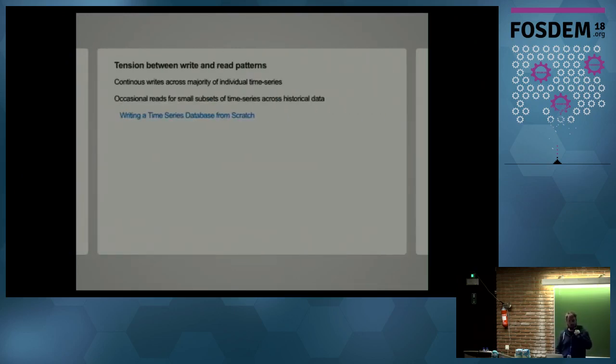So the other thing to bear in mind with time series data is the tension between the read and the write patterns. And this is really important when thinking about how to design the system. So you essentially have continuous writes across the majority of your individual time series. So in the case of Cloudflare, for example, we had 70 million unique time series. We might have maybe 40 million of those time series being written to within the last five minutes. So you have a lot of updates across a broad range of data. But then when you're reading back from the system, you're often reading for a given time range of data. So you have this tension between the write path, which is touching many different time series, and the read path where you're going across time. So that was something that is one of the most interesting properties of storing time series data. And Fabian from the Prometheus project goes into this in more detail in his blog post.